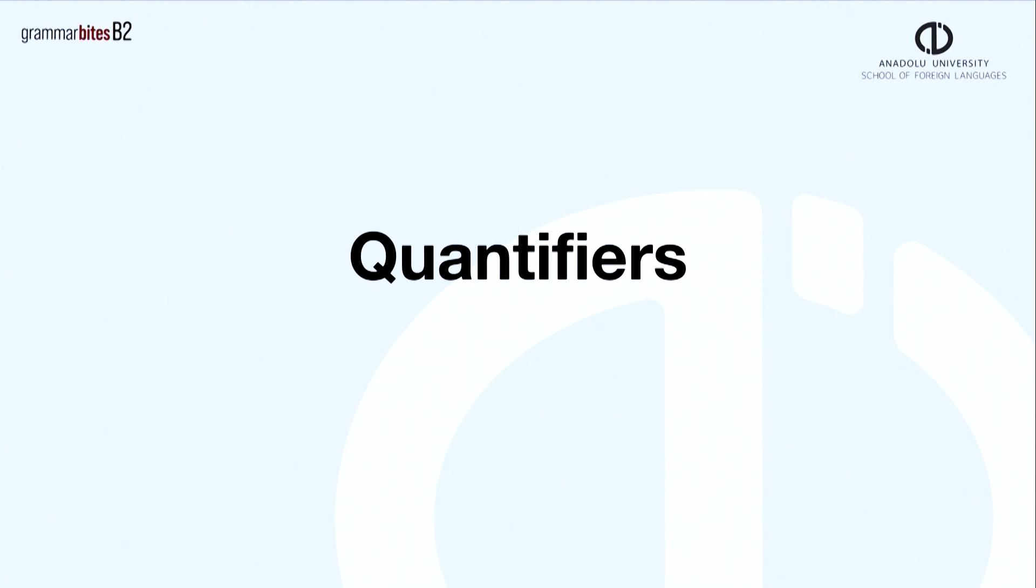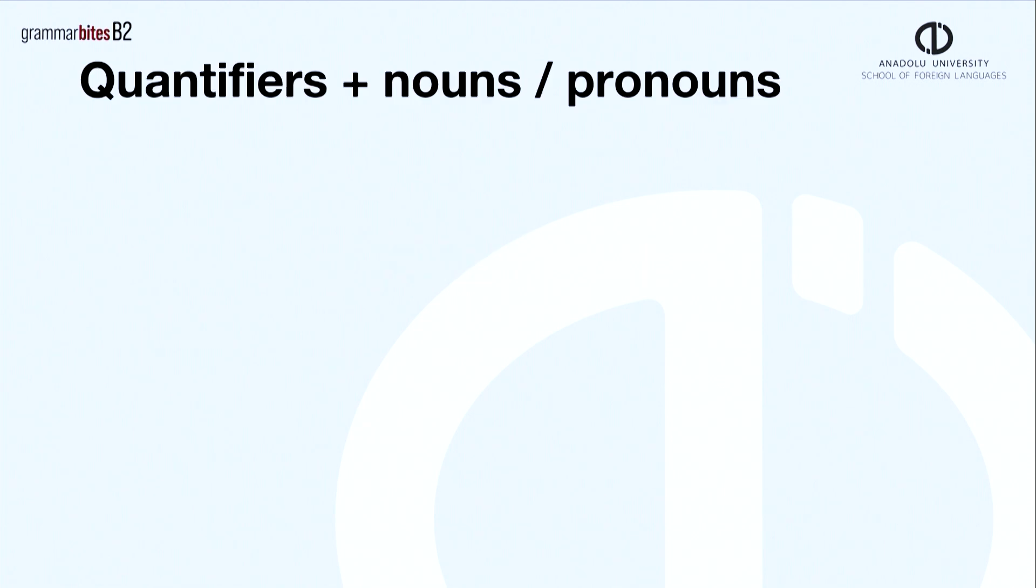Hello friends and welcome to Grammar Bytes. We're looking at quantifiers today and how we use them. Quantifiers show the amount of a thing and they come before nouns. A noun could be either countable or uncountable.